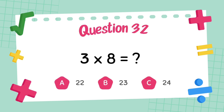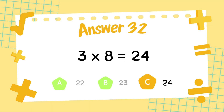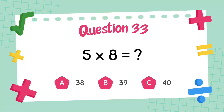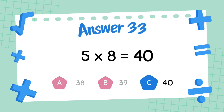What is 3 multiply 8? The answer is 24. What is 5 multiply 8? The answer is 40.